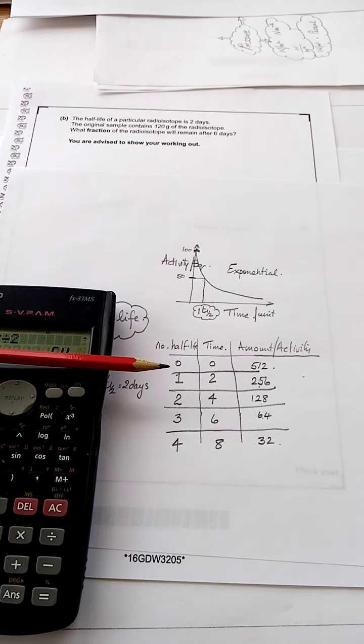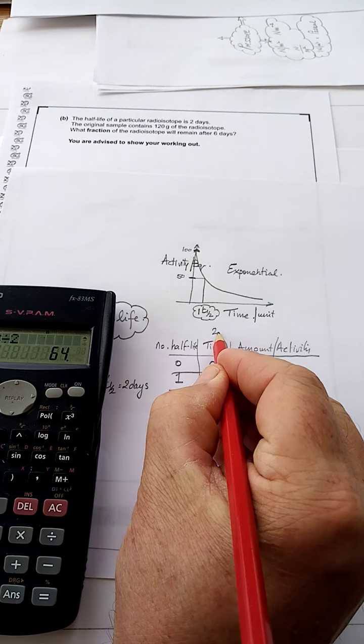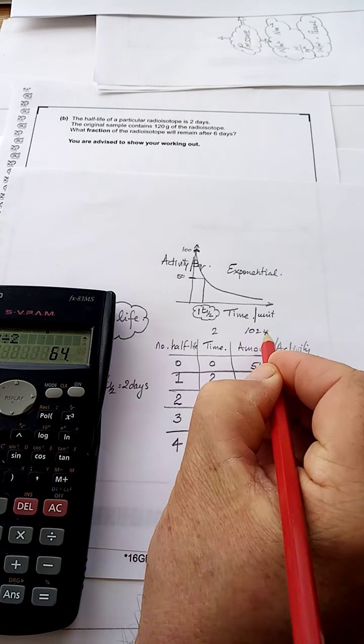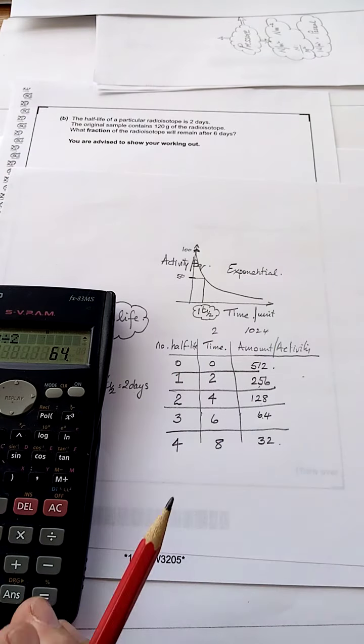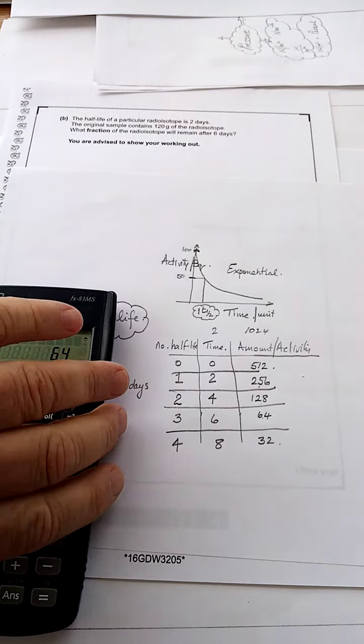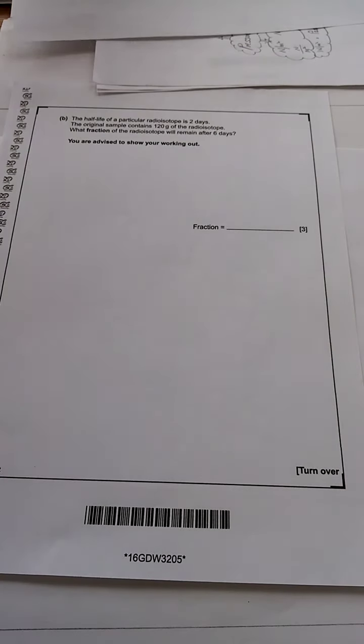You can also go back in time going this way here. Like two days previous to that, that was 1,024. Two days previous to that, so you can go up the way as well. But we hope to show you that in a question later on. So now let's have a look at this question.